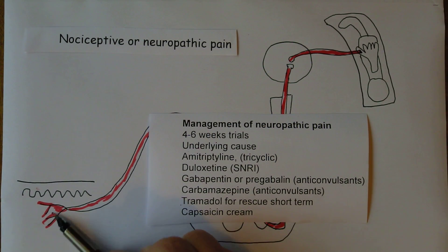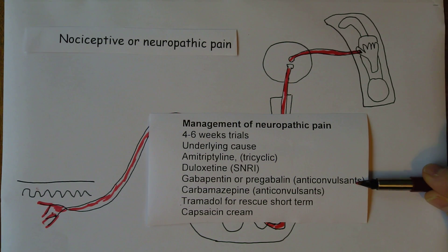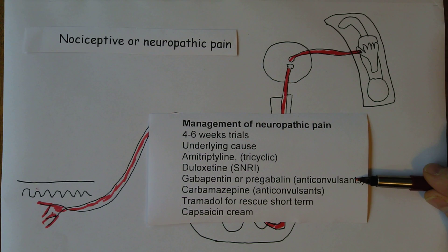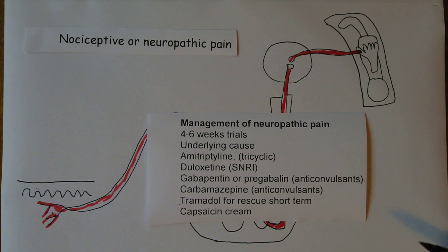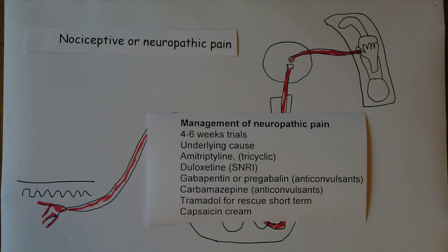Completely different treatment to the normal analgesics used in nociceptive pain. Gabapentin and pregabalin are anticonvulsants that affect the amount of GABA — gamma-aminobutyric acid — a key inhibitory neurotransmitter. Modulating the amount of these neurotransmitters in the central nervous system can reduce neuropathic pain. It can take a while to titrate these. Amitriptyline and pregabalin can be given together. Duloxetine is a very good example for diabetic neuropathy.